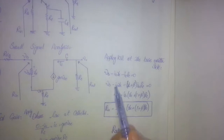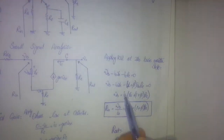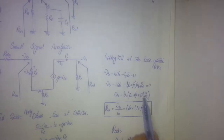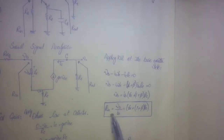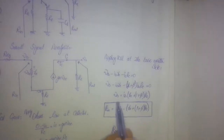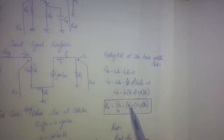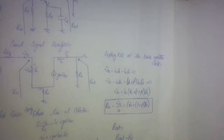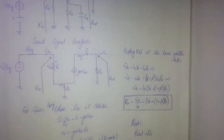Taking IB as a common factor from the two terms, we get: VB = IB·[Rπ + (1 + β)·RE]. Making the ratio VB/IB, we get RN equals Rπ plus (1 + β)·RE. Note that Rπ and RE are in series, and the (1 + β) factor appears due to the emitter current relationship.